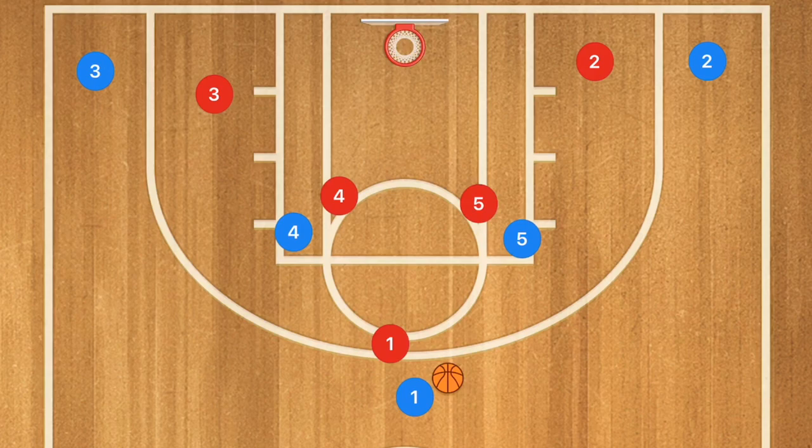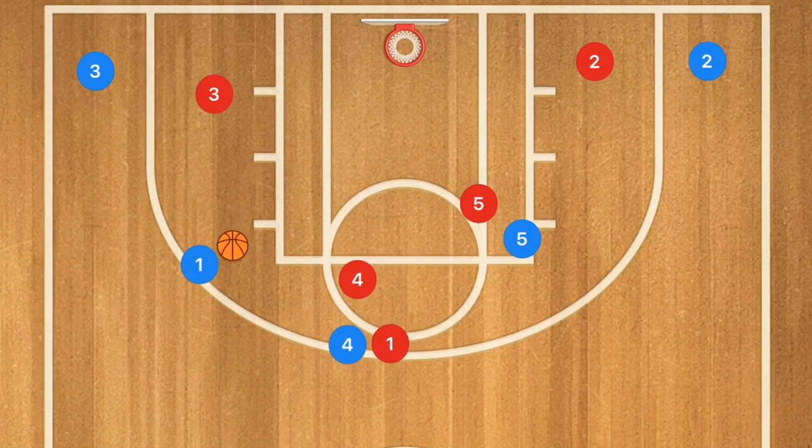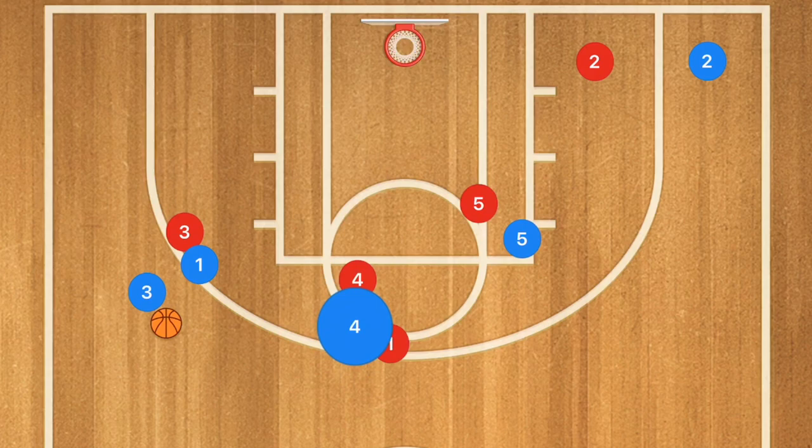In this first basketball play, player 4 is going to set a screen for player 1, who will use that screen and then continue through, having player 3 as a dribble handoff. Instead of player 4 rolling towards the basket, he's going to continue through. Player 1 is probably going to fight through, and if he doesn't, player 4 is going to switch off one or the other.